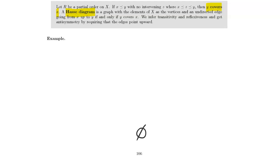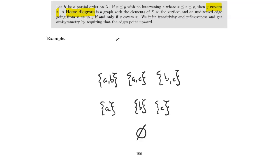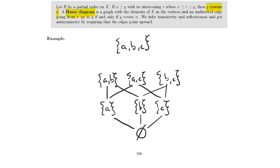Let's draw the Hasse diagram for the same relation and see how much better it looks. Once again we have the empty set, the sets {A}, {B}, {C}, {A,B}, {A,C}, {B,C}, and {A,B,C}. I'm going to draw lines from the empty set up to {A}, {B}, and {C} to imply the empty set is a subset of these. But I'm not going to draw one from the empty set to {A,B} because it's implied by the path through {A}. So I add the edges from each singleton up to the two-element sets that contain it, and from those up to {A,B,C}. This nice cube-looking shape is the Hasse diagram for the subset relation on the power set of {A,B,C}.